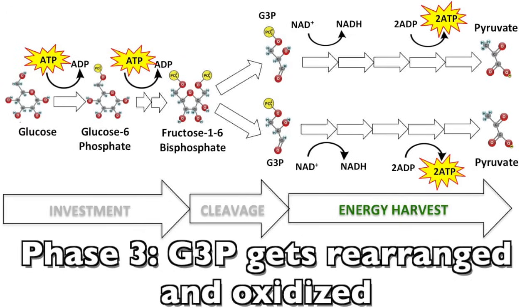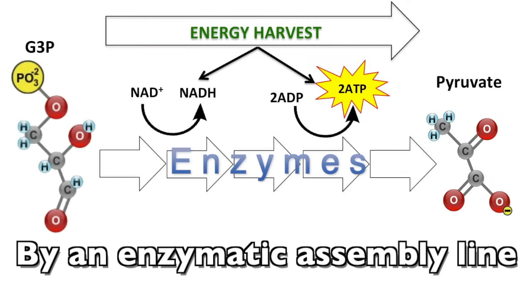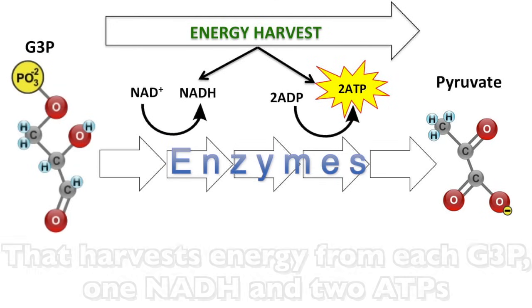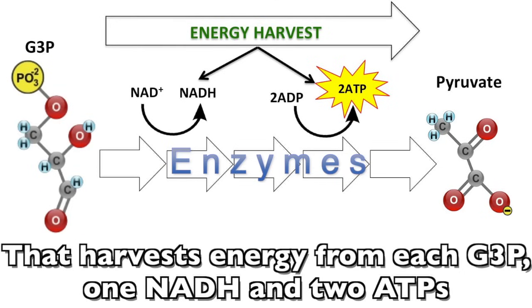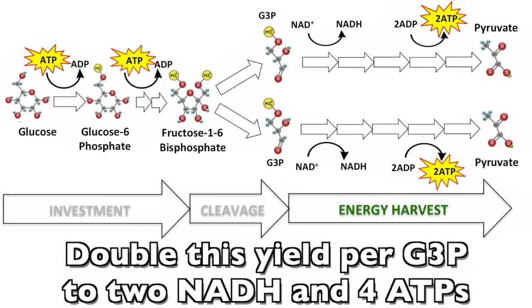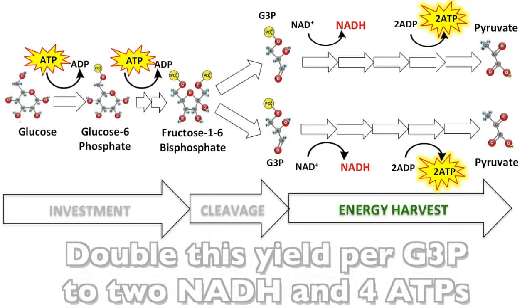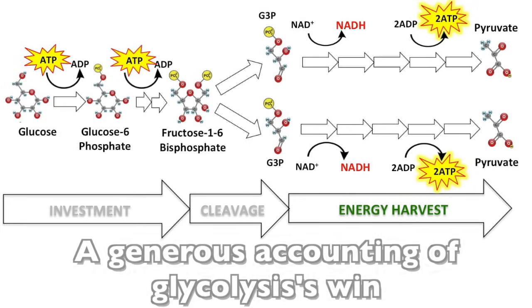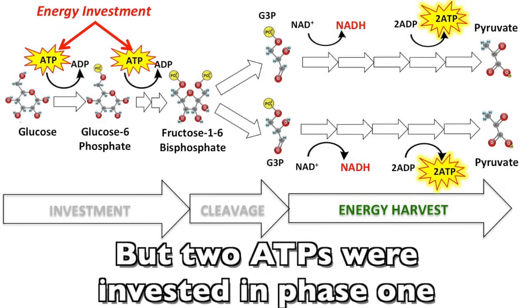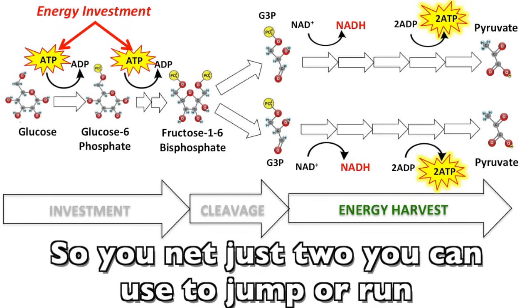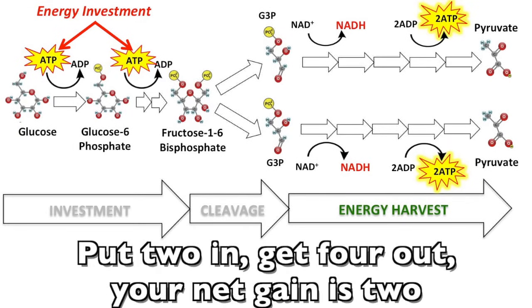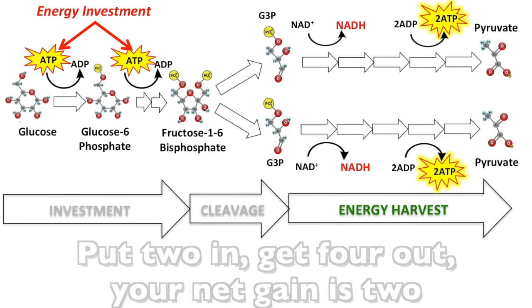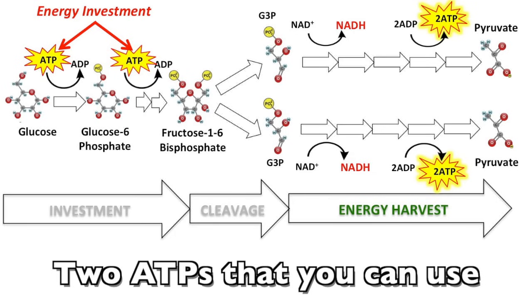Phase 3: G3P gets rearranged and oxidized by an enzymatic assembly line that harvests energy from each G3P — one NADH and two ATPs. Double this yield for two G3Ps: two NADH and four ATPs. That's the gross yield for every glucose in. But two ATPs were invested in phase 1, so you net just two. Put two in, get four out, your net gain is two ATPs.